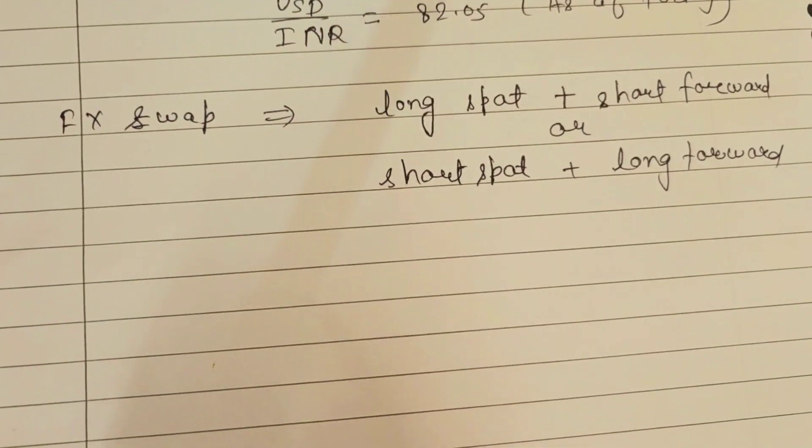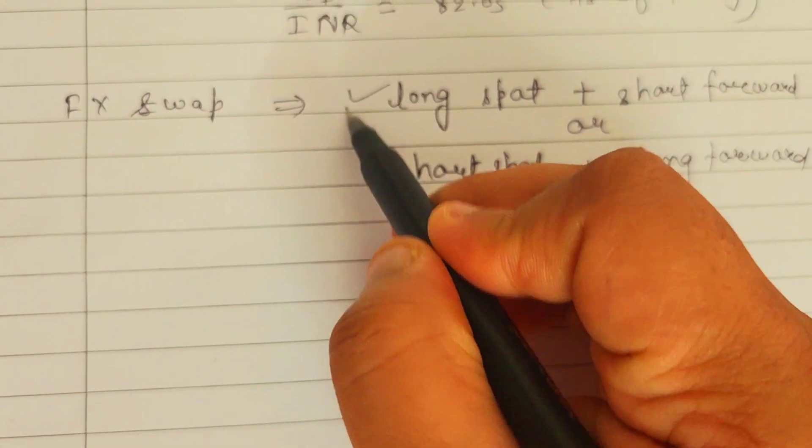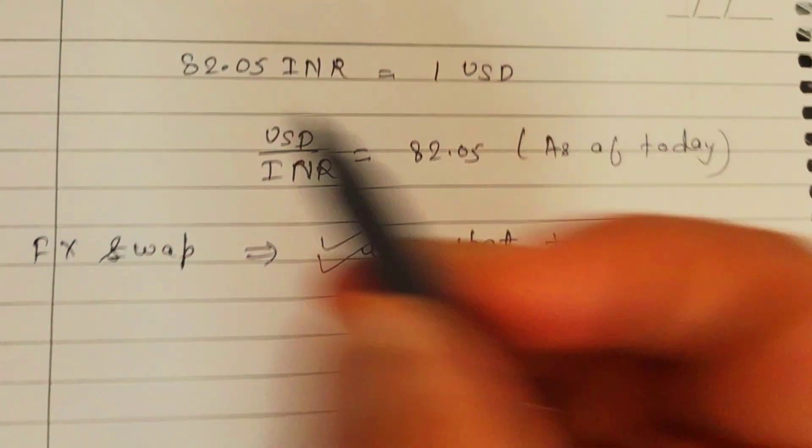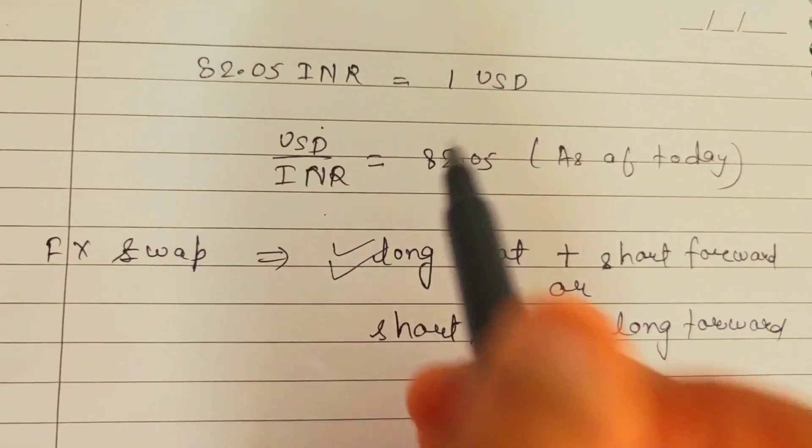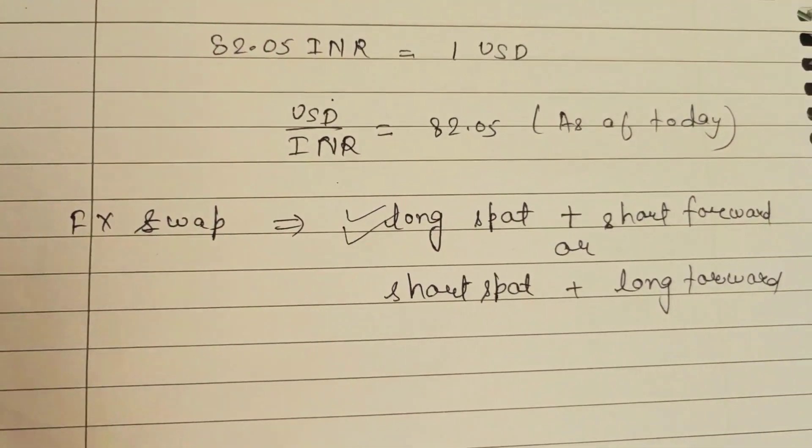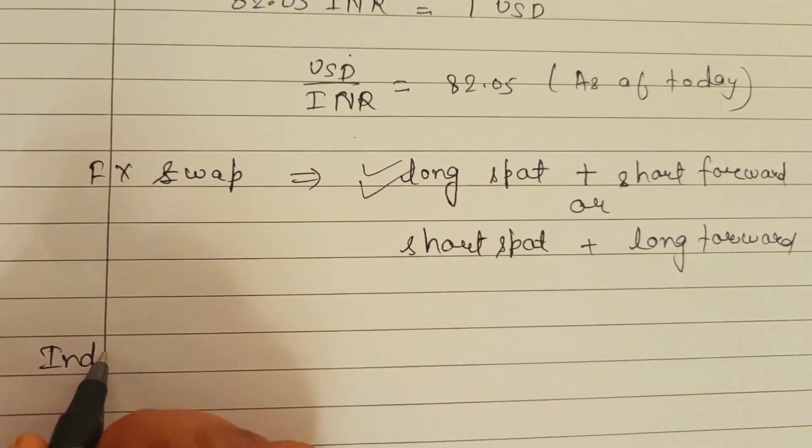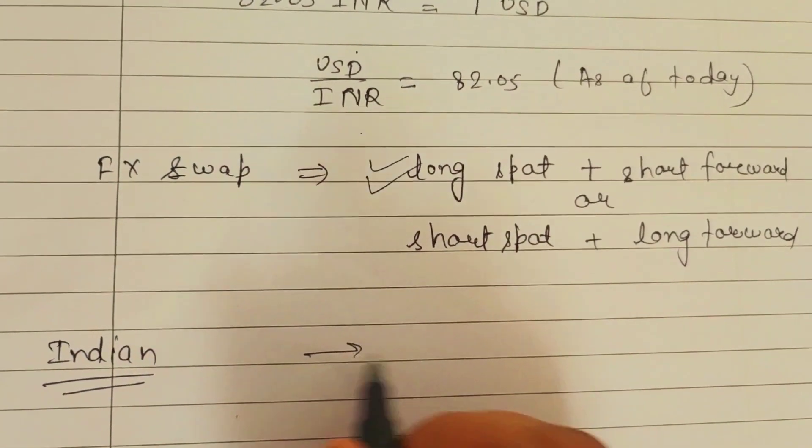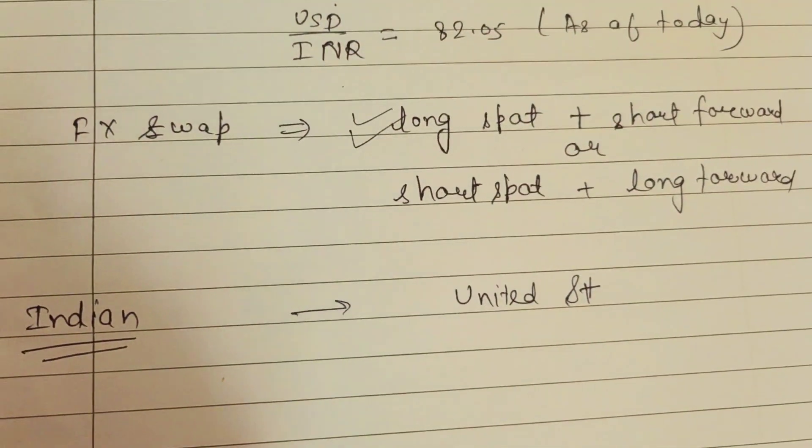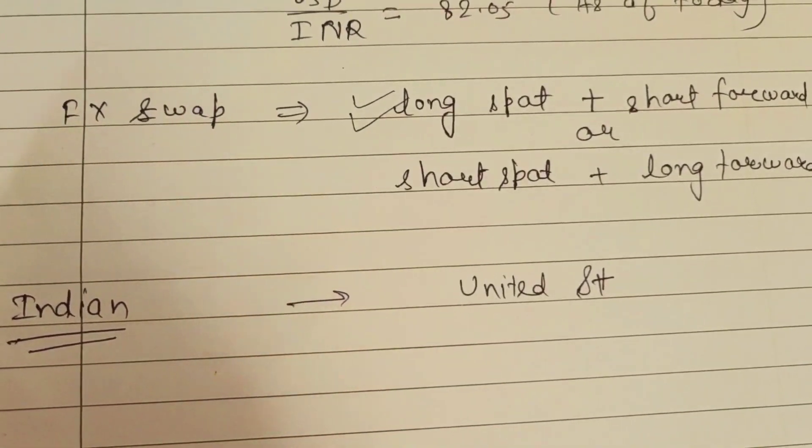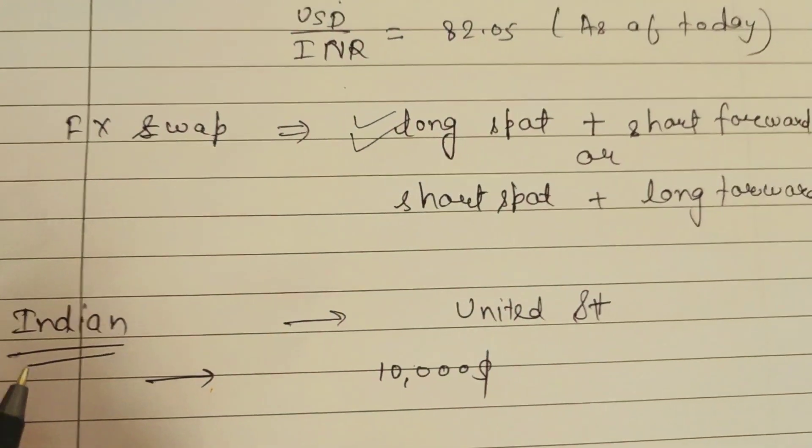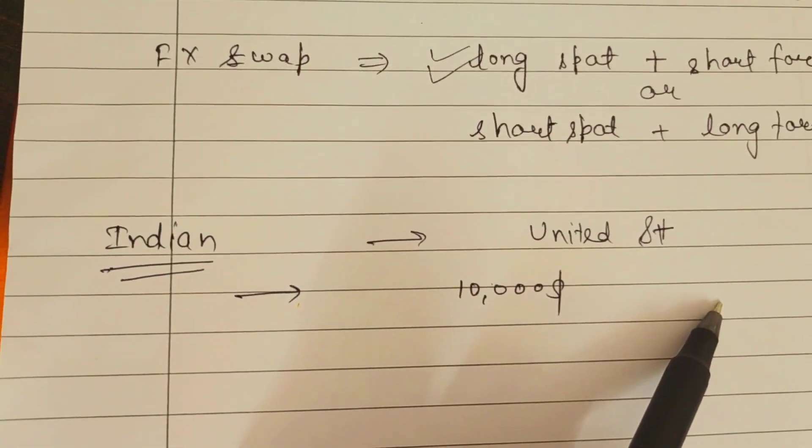Coming to a practical scenario to help you understand, let's take this long spot example. We already saw that INR and USD ratio is 82.05, so to buy one dollar you should pay 82.05 INR. Let's assume there is an Indian company who has its market in the United States.